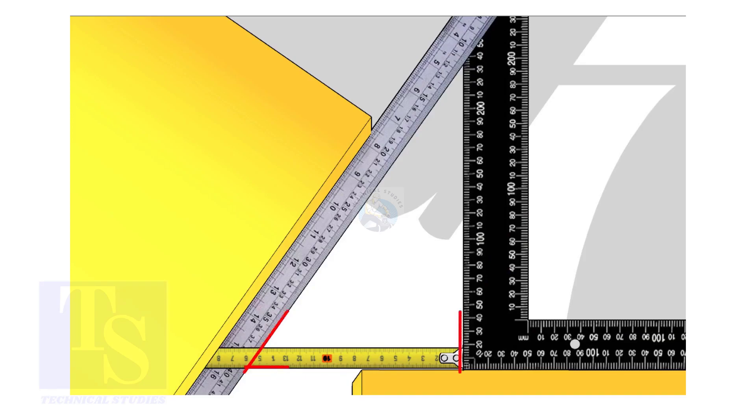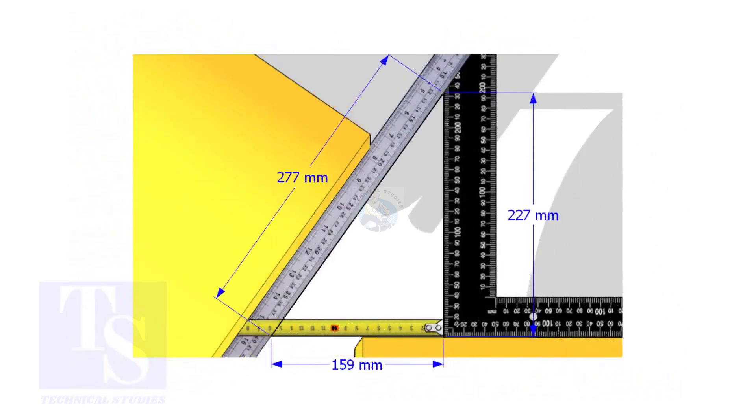Measure and note down the dimensions of the triangle. Assume that these are the dimensions. Let us calculate the included angle.